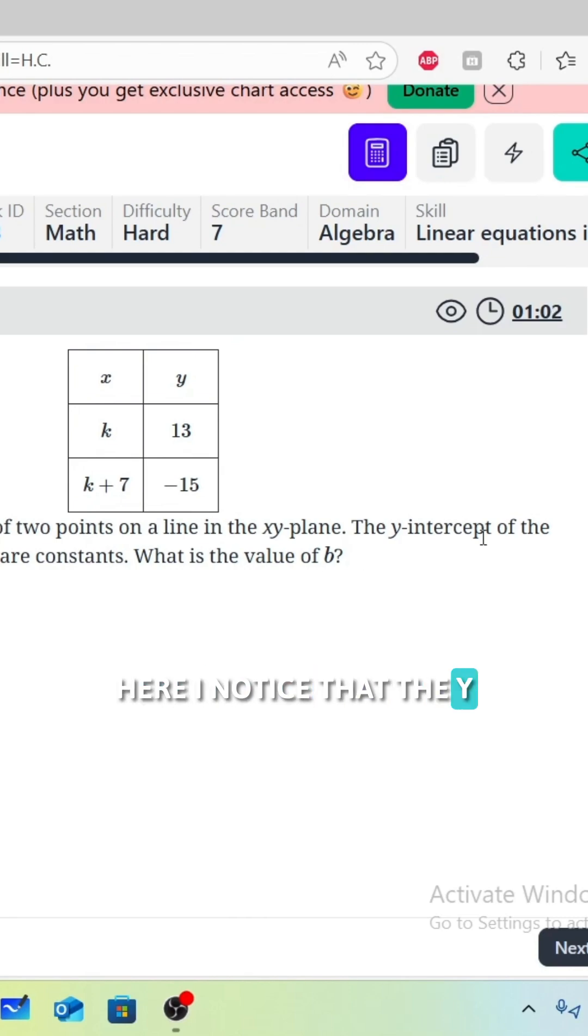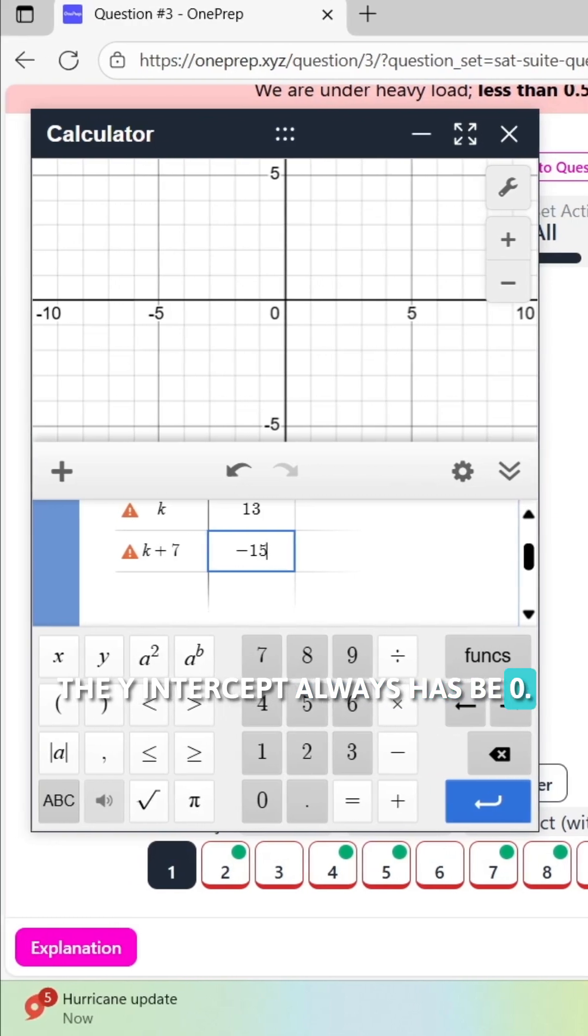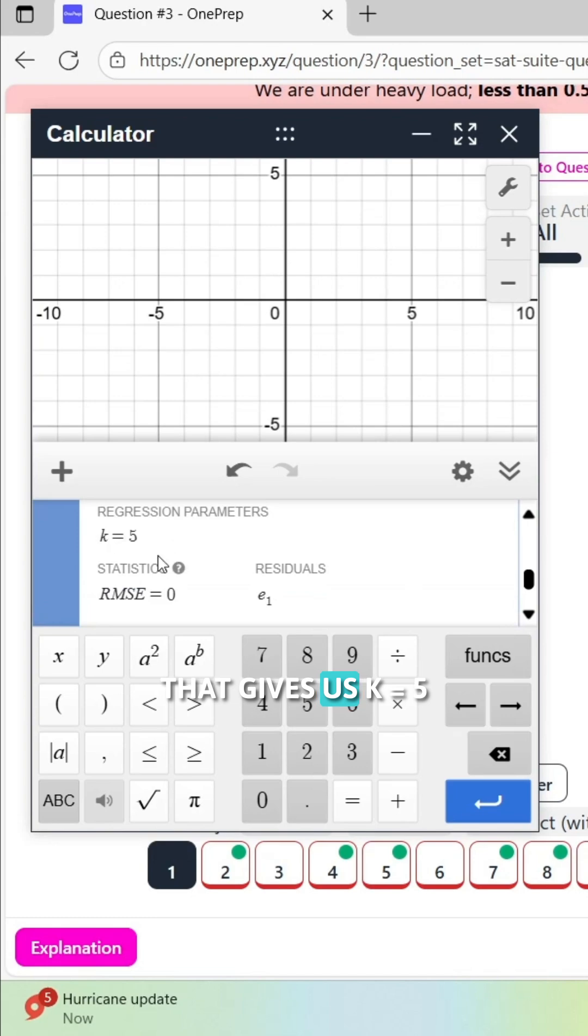Here I noticed that the y-intercept of the line is k minus 5 comma b, where k and b are constants. We know the x value of the y-intercept always has to be 0. So this gives us k minus 5 equals 0, which means k equals 5.